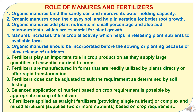Fourth, manures increase the microbial activity, which helps in releasing plant nutrients to available form. Fifth, organic manures should be incorporated before sowing or planting because of slow release of nutrients. Sixth, fertilizers play an important role in crop production as they supply large quantities of essential nutrients to crops.